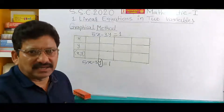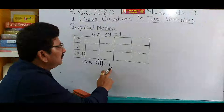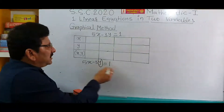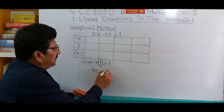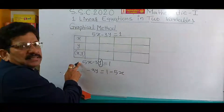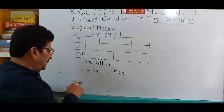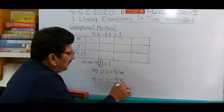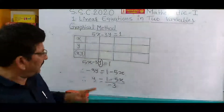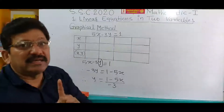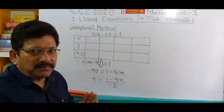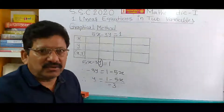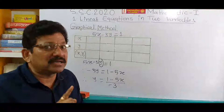Transfer 5x to the right-hand side: minus 3y is equal to 1 minus 5x. This 5x was positive, so it becomes minus. Therefore, y is equal to 1 minus 5x divided by minus 3. Please keep in mind: when a coefficient is transferred, the sign does not change — meaning a number that is in multiplication or division, if it moves to the denominator or numerator, the sign does not change.